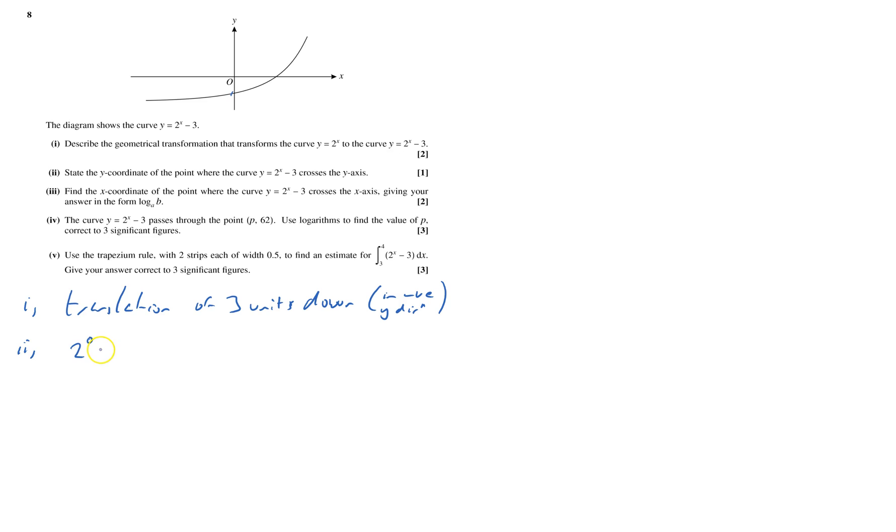so I got to do 2 to the power of 0 minus 3, which is 2 to the power of 0. Anything to the power of 0 is 1. 1 take away 3 is minus 2. So that's the y-coordinate.